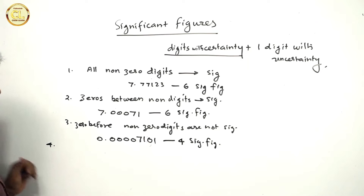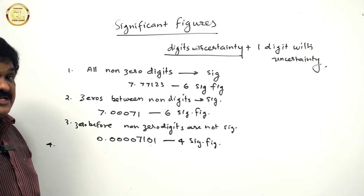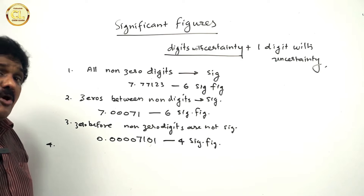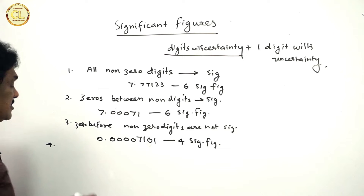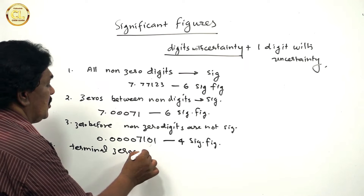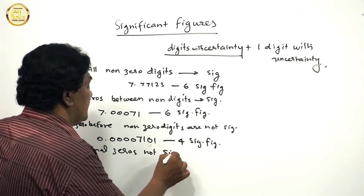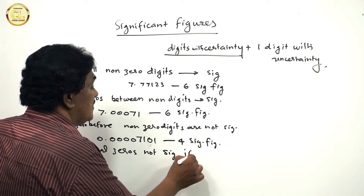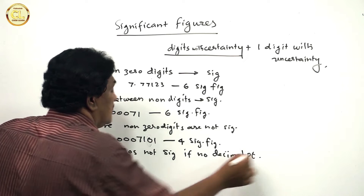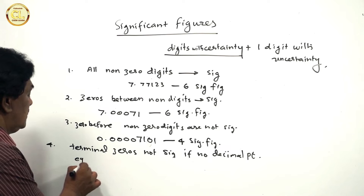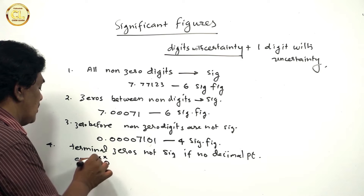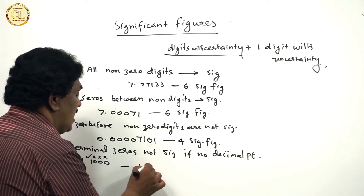Fourth point: terminal zeros are significant when there is a decimal point, but terminal zeros are not significant when there is no decimal point. For example, 1000 — there is no decimal point, so these three zeros are not significant. Only 1 is significant, and it can be expressed in scientific notation as 1 × 10².